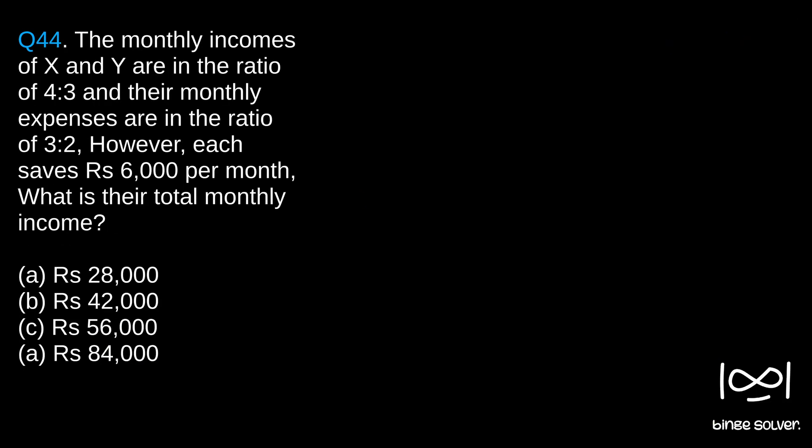Next question, question 44. The monthly incomes of X and Y are in the ratio of 4 to 3, and their monthly expenses are in the ratio of 3 to 2. However, each saves rupees 6,000 per month. What is their total monthly income?